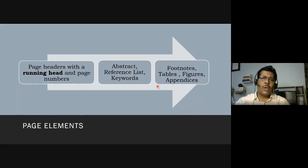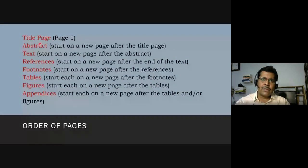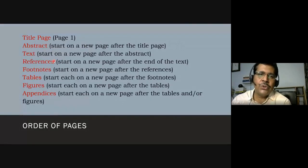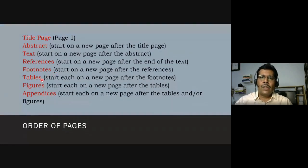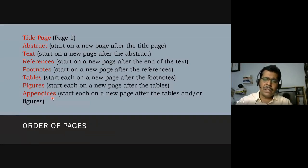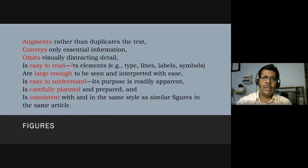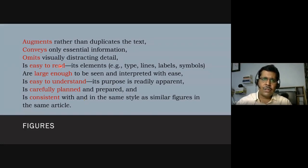The order of pages is: first the title page, then the abstract starting on a new page, then the text starting on a new page after the abstract. The text should not begin beneath the abstract. References come after the text, footnotes on a new page after references, then tables and figures, and finally appendices or supplementary material.